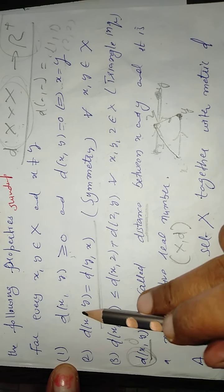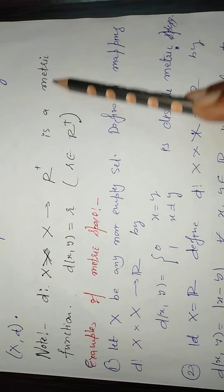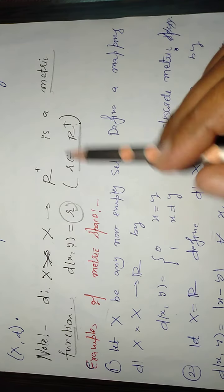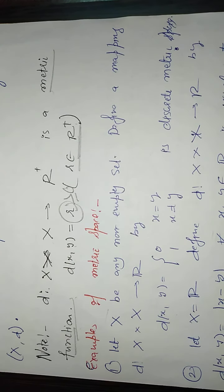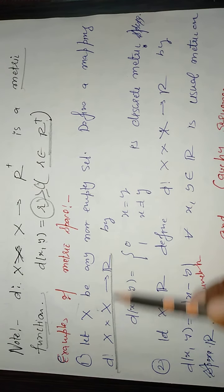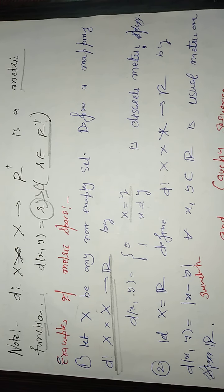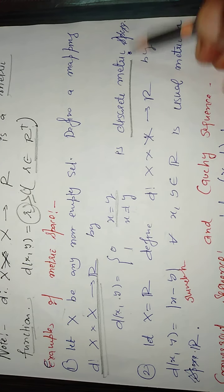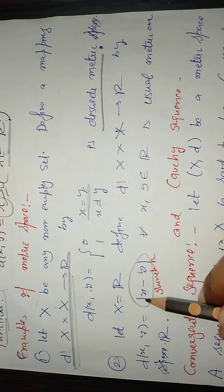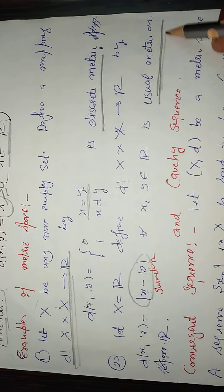A set x together with this metric is called a metric space, written as the pair (x, d). d maps x cross x to R positive, meaning the real number output is always greater than or equal to 0. For example, if x is any non-empty set, defining d(x, y) = 0 when x equals y, or 1 when x is not equal to y, is called a discrete metric. If x is the set of real numbers R, then d(x, y) = |x − y| is called the usual metric.